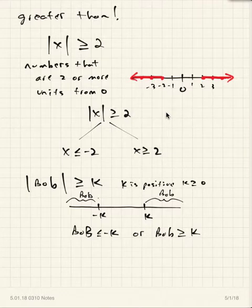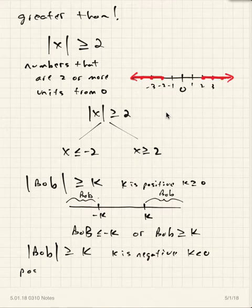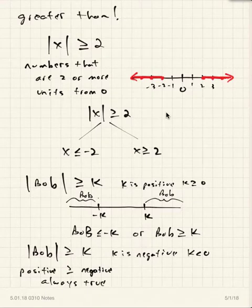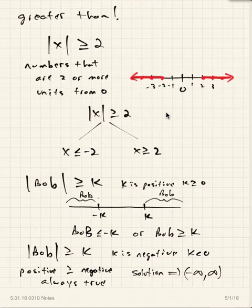If the absolute value of Bob is greater than or equal to K and K is negative, remember absolute values are positive numbers. A positive number is always greater than or equal to a negative number, so this is always true — the solution is all real numbers. This is completely the opposite of the less than case with a negative constant.